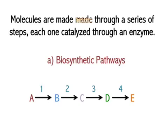Although one gene can determine the synthesis of one molecule like one enzyme, sometimes other molecules require an entire pathway to create that final molecule. For example, here you have a generic biosynthetic pathway. The letters represent different intermediates in that pathway. You have precursor A as the starting material, going through a series of intermediates to produce product E. The numbers represent the various enzymes required to go from one step to another.